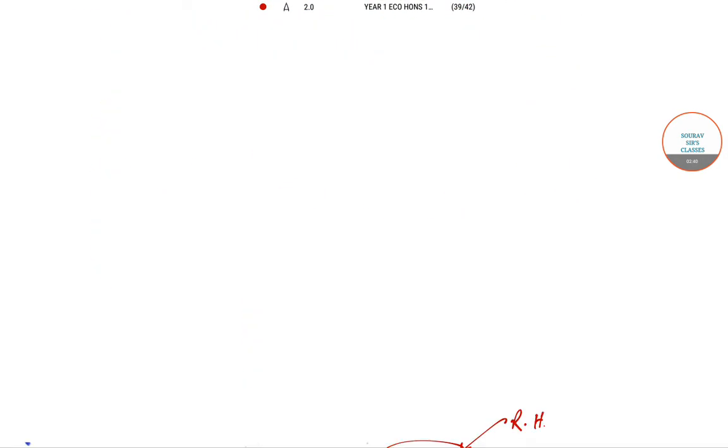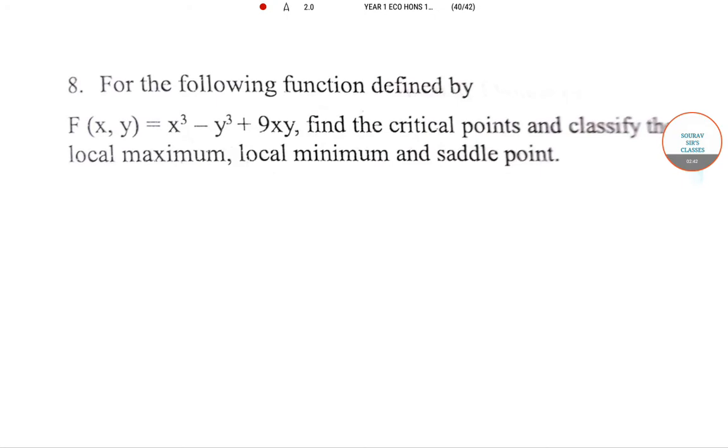Now we are proceeding to the very next question. For the following function defined by F(x,y) = x³ - y³ + 9xy, find the critical points and classify the local maximum, local minimum, and saddle point. This is a cubic function, a two-variable cubic function.